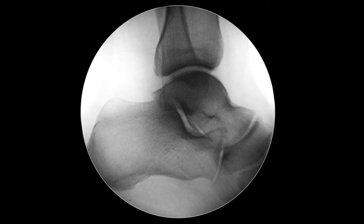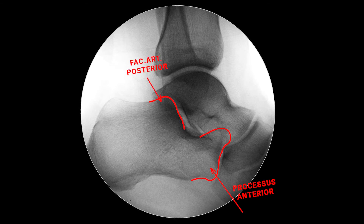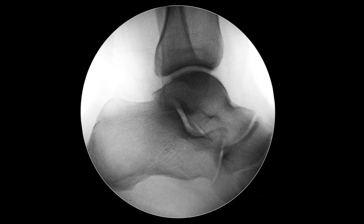At the lateral view we can clearly see the anterior process of the calcaneus, the posterior articular facet, and the calcaneal tuber. The sustentaculum tali is projected onto the sinus tarsi region. At the lateral view, the orthopedic surgeon can find the following traumatic changes.